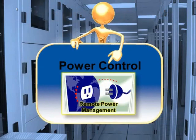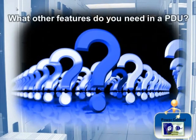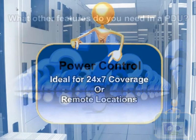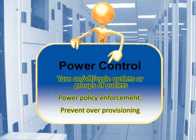Besides monitoring power consumption, some rack PDUs allow for remote power management. Would you like to be able to reboot stuck servers without having to visit the data center? Power outlet cycling is ideal for data centers without 24-hour staff coverage or devices deployed in remote locations, such as a wiring closet or off-site hosting. The ability to schedule power off per outlet allows you to easily enforce IT power policies, such as requiring that all non-production servers be turned off after 6 p.m.